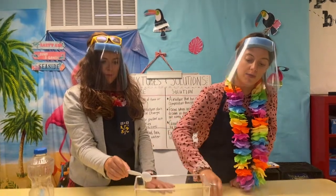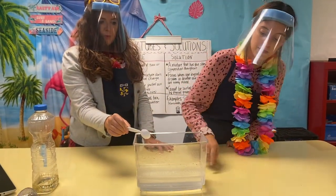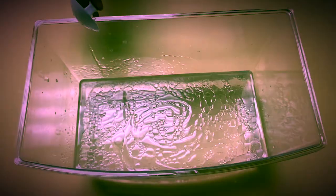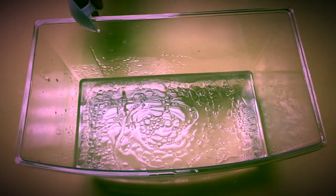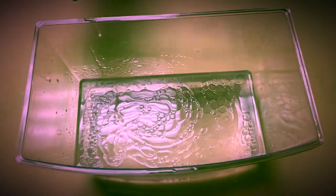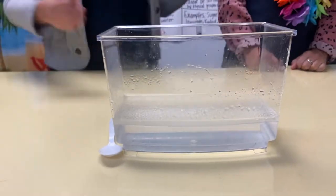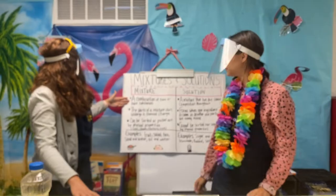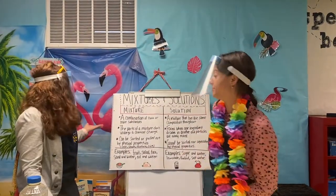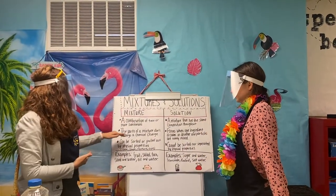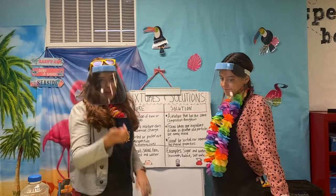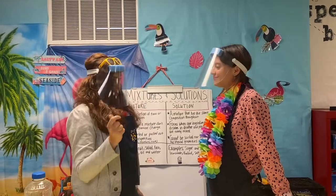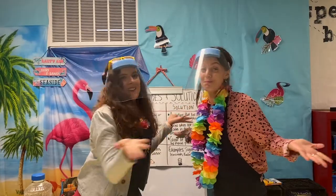Entonces esto es una mezcla. Tenemos dos sustancias que por mucho que las removamos van a separarse, y podemos ver perfectamente que en la parte superior está el aceite y debajo el agua. So, like a summary: a mixture is a combination of two or more sustancias — oil and water — and the parts of a mixture don't undergo chemical change. See you soon in Science Paradise! Bye!